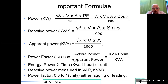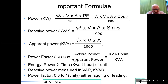Important formulas: Active power in kilowatts = (root 3 × V × A × power factor) / 1000, where power factor is cos φ. Reactive power in kVAR = (root 3 × V × A × sin φ) / 1000. Apparent power in kVA = (root 3 × V × A) / 1000. Power factor (cos φ) = active power (kW) divided by apparent power (kVA). Energy = power × time in kilowatt-hours. Reactive power is measured in VAR or kVAR — spelled VAR in capitals.